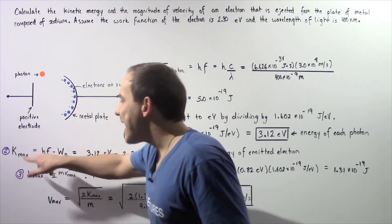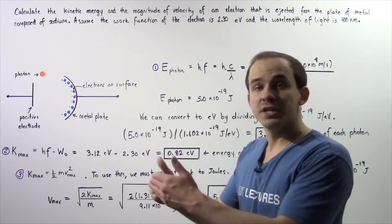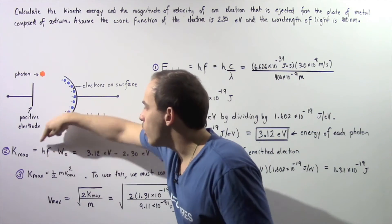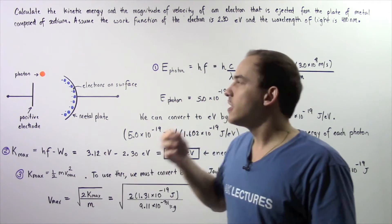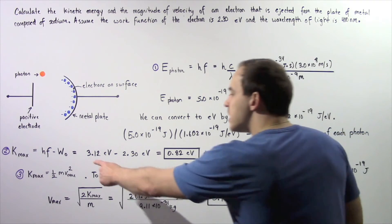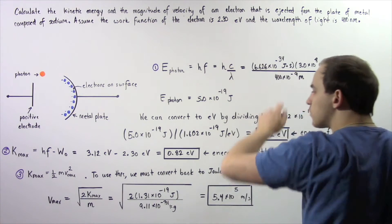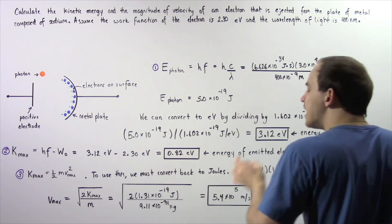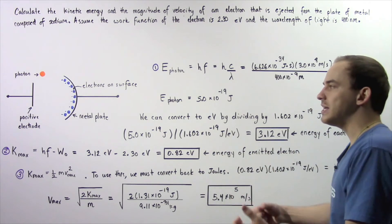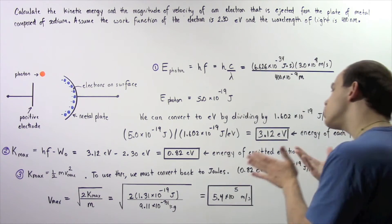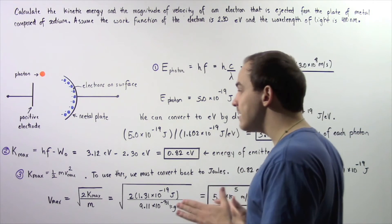Now let's calculate how much energy the electron gains as kinetic energy. The maximum kinetic energy of the electron equals the difference between the photon's energy and the work function. So 3.12 electron volts minus 2.3 electron volts gives us 0.82 electron volts — this is how much energy is transformed into the kinetic energy of the ejected electron.